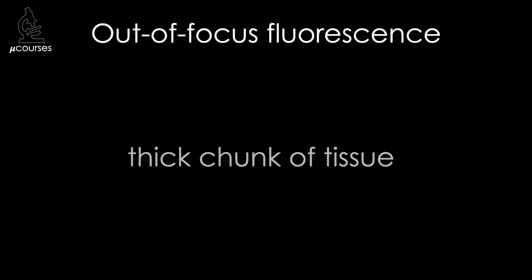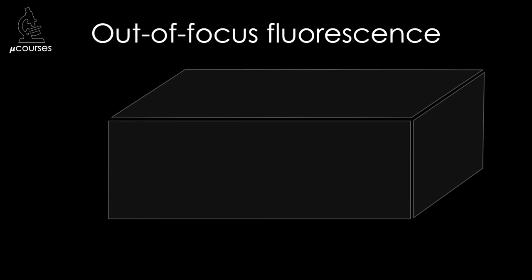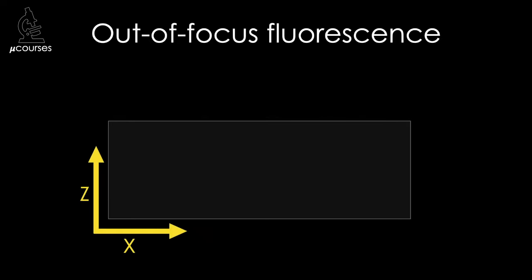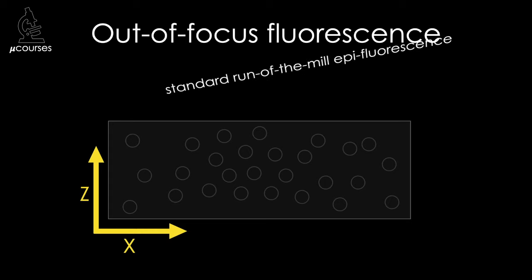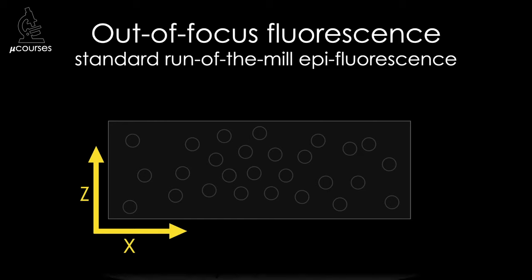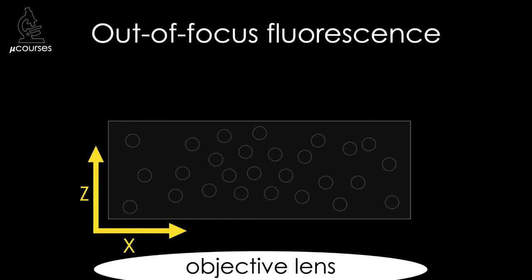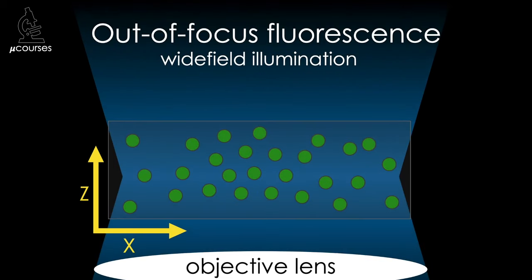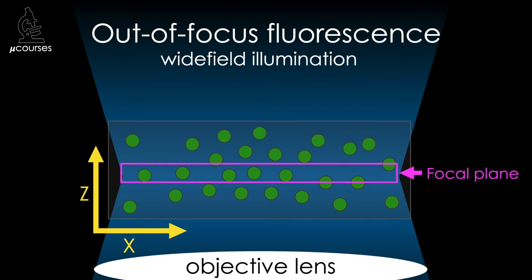Let's say you have a thick chunk of tissue on a slide and you pop it onto your microscope. Looking at the specimen in the axial direction, the specimen is filled with objects labeled with fluorophore, and you're using a standard epifluorescence microscope with the objective underneath the specimen. Standard fluorescence microscopes use wide-field illumination, which illuminates the entire field of view, and as the illuminating light passes through the specimen, fluorophores above and below the focal plane of interest are illuminated as well.